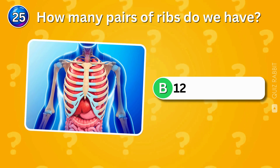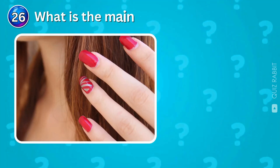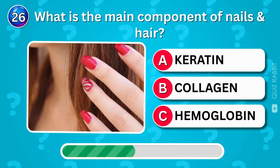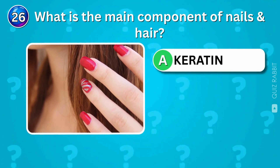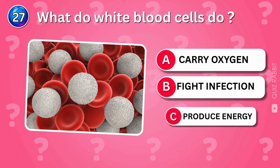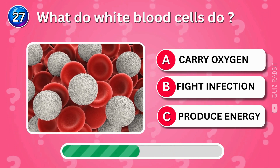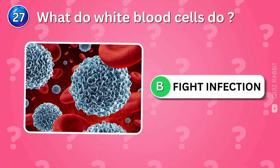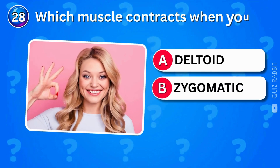How many pairs of ribs do we have? We have 12 pairs of ribs — they protect your vital organs. What is the main component of nails and hair? Keratin — this tough protein is what makes your nails and hair strong. What do white blood cells do? White blood cells fight off infections — they're your body's defense army against germs.